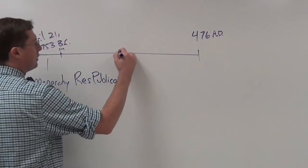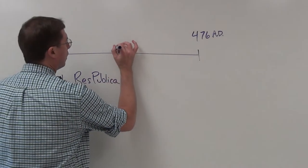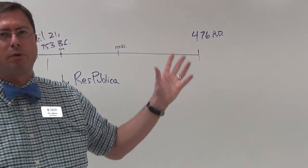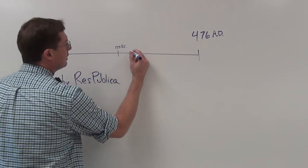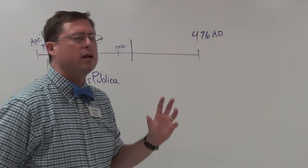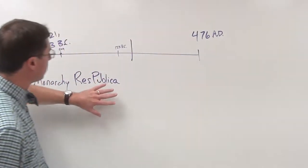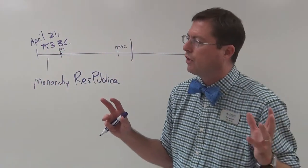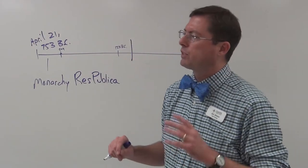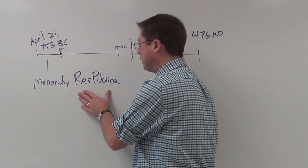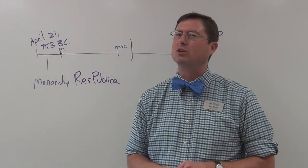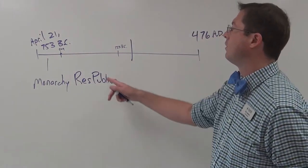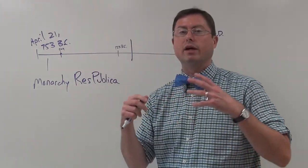At some point in the Res Publica — I usually arbitrarily give it the date of 133 BC — things got out of hand. Civil wars broke out, there was civil strife, and this lasted for about a hundred years, until essentially one man contained all of the power. You still had the Res Publica in place, but the man who finally won all of the civil wars was Octavian. Even though there was still a senate and the structure of the Res Publica, it becomes clear to us as historians that Rome is no longer really a republic — it is what we call a principate.